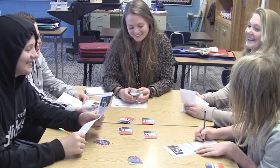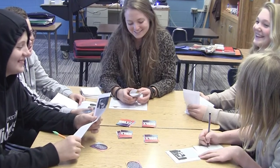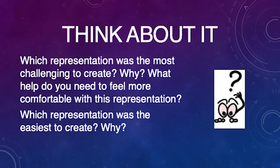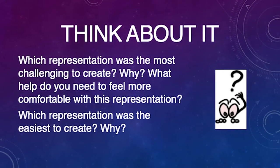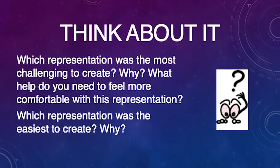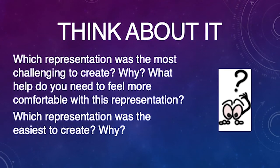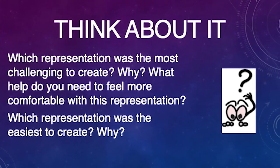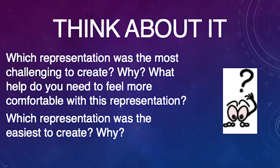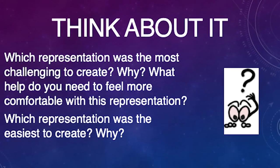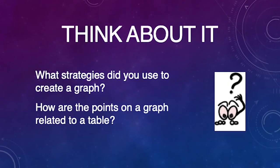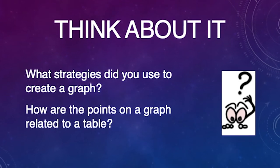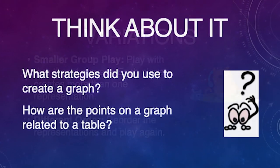Play round two with a new set of booklets beginning with another ugly functions card in each. After playing, think about and share which representation was most challenging to create. What help do you need to feel more comfortable with this representation? Which representation was the easiest to create? What strategies did you use to create a graph, and how are the points on the graph related to the table?